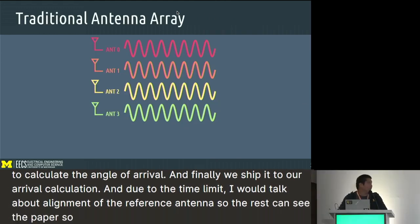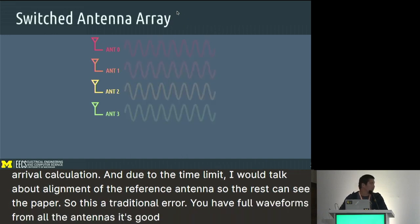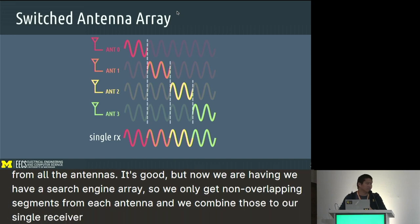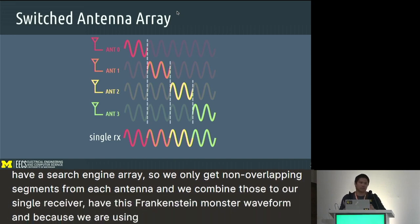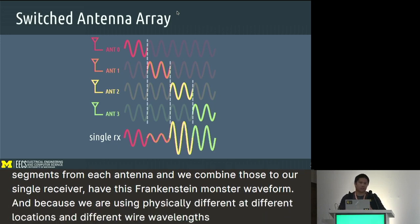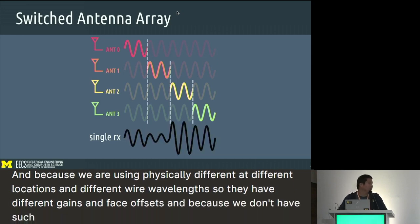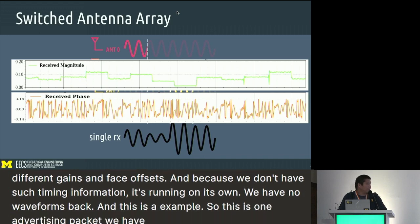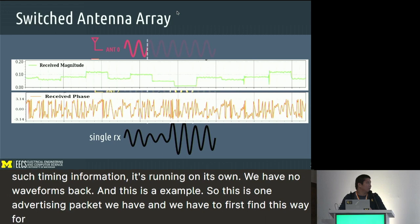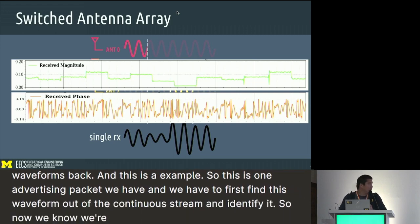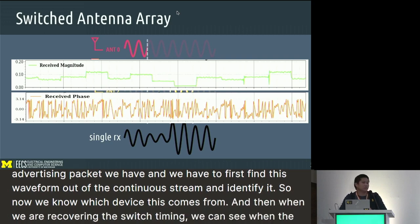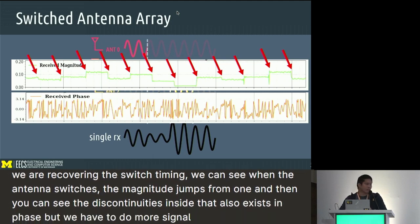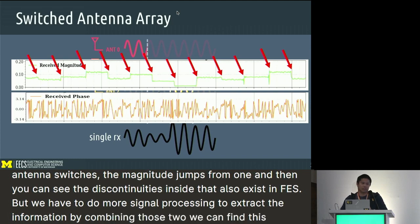In a traditional antenna array, you have four waveforms from all antennas simultaneously. But with a switched antenna array, we only get non-overlapping segments from each antenna, combined into a single receiver — this creates a Frankenstein monster waveform. Because we use physically different antennas at different locations with different wire lengths, they have different gains and phase offsets. And since we have no switch timing information, we have unknown gaps. When the antenna switches, the magnitude jumps and there are discontinuities in phase. Combining magnitude and phase information, we can find the correct switch timing and identify which segment comes from which antenna.